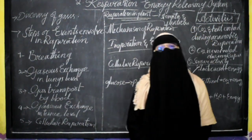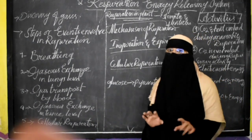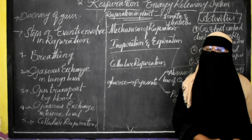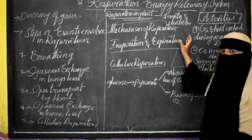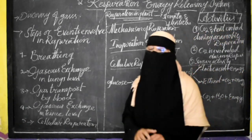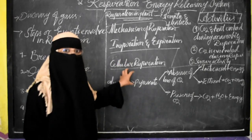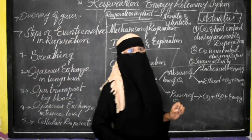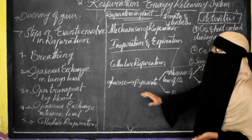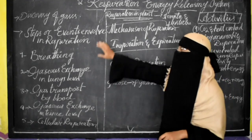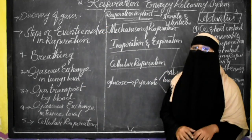Hello students, we have completed the first chapter and now we are going to take the quick review for the second chapter — respiration, the energy releasing system. This is the biology SSC examination point of view. The first important thing is the discovery of gases — the work done by Lavoisier and Priestley. We need to be aware of what is chalky acid, what is vitiated air, and what is respirable air.